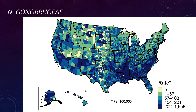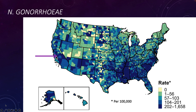Here is the county-level map of the United States. You can see that in the southeast — particularly places like Louisiana, Mississippi, Alabama, and South Carolina — there are relatively high rates of infection. Also, Fresno County has one of the higher incidence rates in the country.